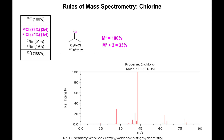Now let's look at chlorine. There are two isotopes: chlorine-35 and chlorine-37, separated by a mass difference of two. The base mass contains carbon-12 and chlorine-35 at 100%, but since chlorine-35 is three times as abundant as chlorine-37, two mass units higher at M+2 you get a peak roughly a third the size of the first one.